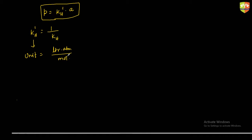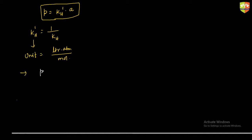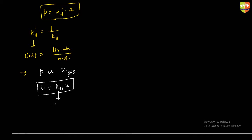Similarly, since more moles of gas means a higher mole fraction, we can also write P = KH'' × X, where X is the mole fraction of the gas in solution. This is another Henry's constant, and the unit of this KH'' is atmospheric (ATM). So there are three different expressions for Henry's Law.